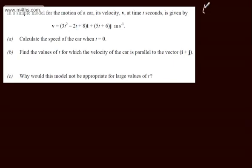So I'm going to write t equals zero. When t equals zero, v is going to be equal to 8i plus 6j meters per second. All I've done is subbed in t equals zero.